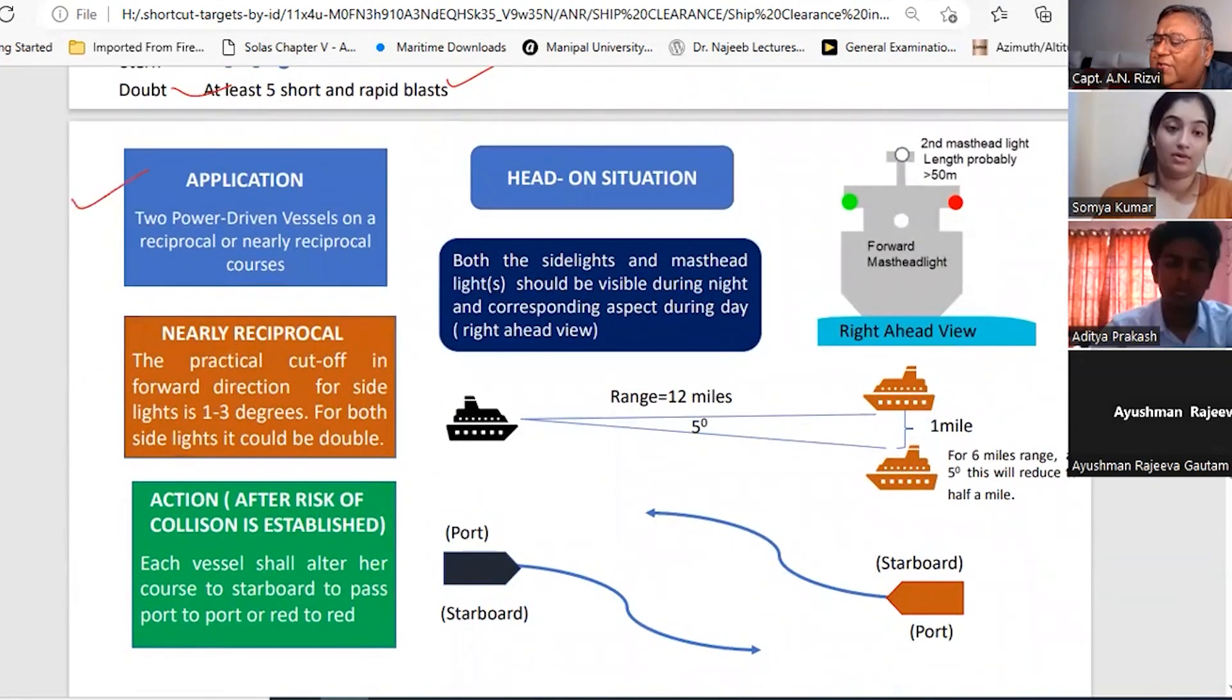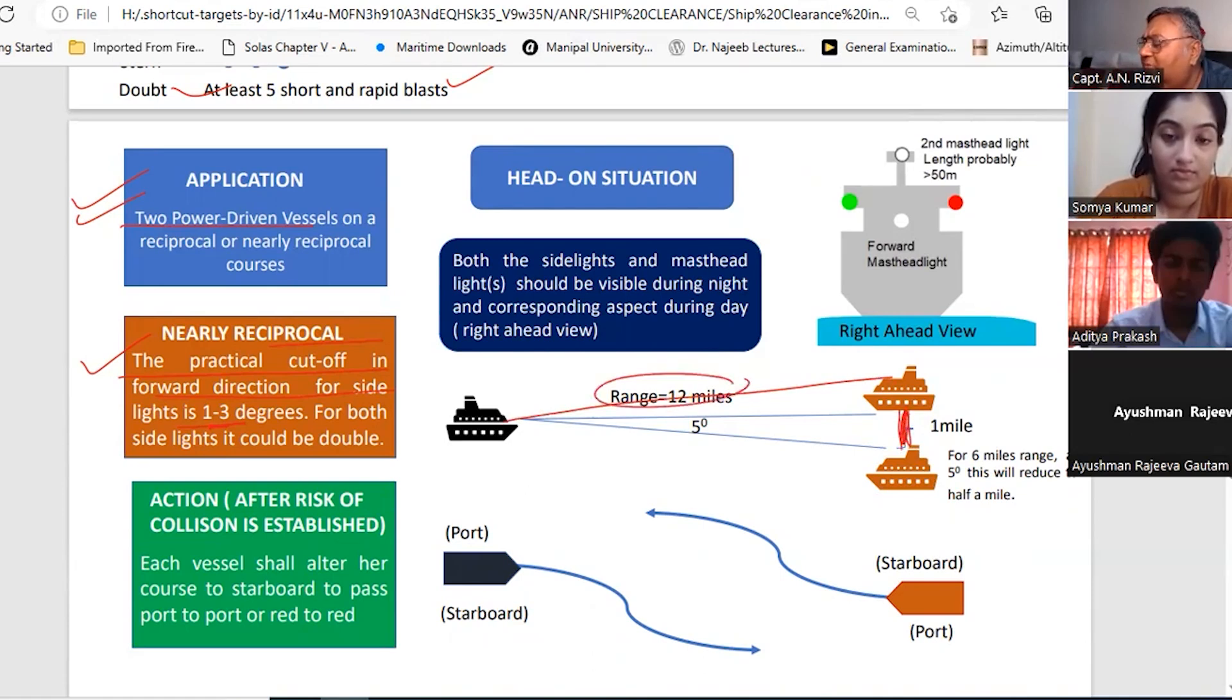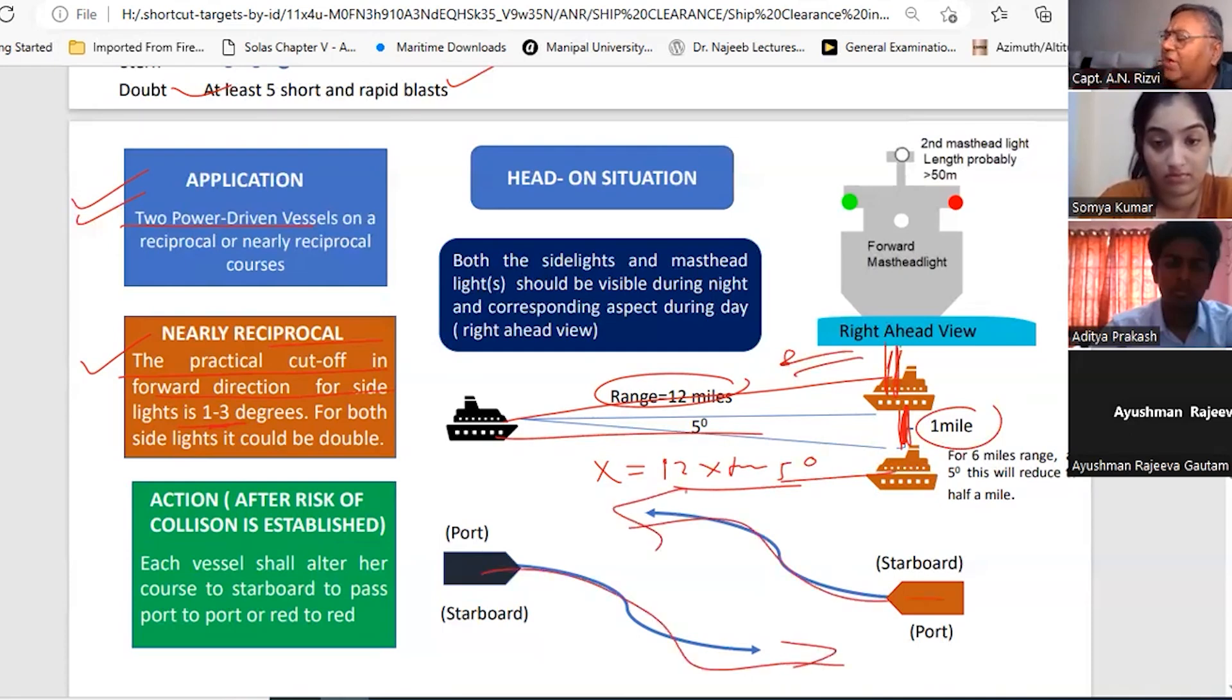Let me explain about head-on situation. First of all, it is applicable to 2 power-driven vessels. Remember, if one vessel is NUC, RAM, sailing vessel, fishing vessel, etc., then this rule is not applicable. This is applicable only when there are 2 power-driven vessels and when they are on reciprocal or nearly reciprocal courses. How to define nearly reciprocal? This says 1 to 3 degrees of the cut-off, so maybe on both sides it could be double, so 2 to 5 degrees. Say for 5 degrees, suppose this vessel is 12 miles, so this distance X is equal to 12 into tan 5 degrees, that is about 1 mile. So 1 mile this side, 1 mile this side, that is also head-on situation. In head-on situation, what you have to do - alter course to starboard, pass port to port. Everybody knows. And this is the configuration - you need to see the masthead light or first masthead light and side lights.